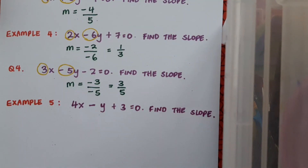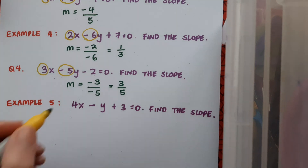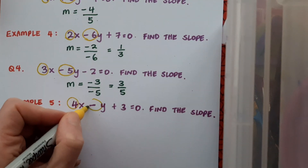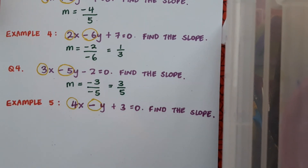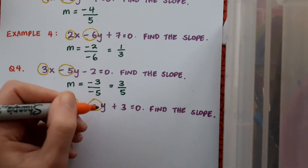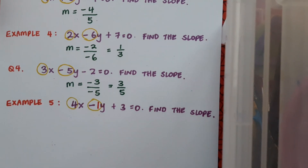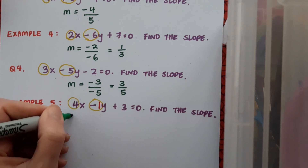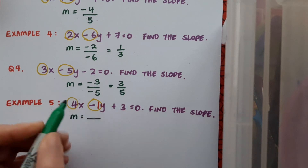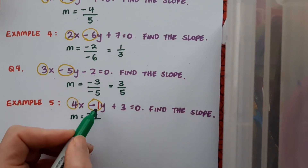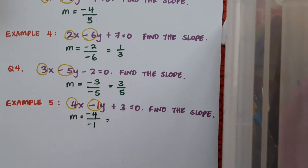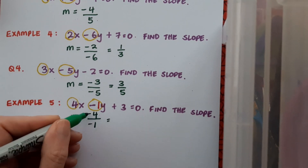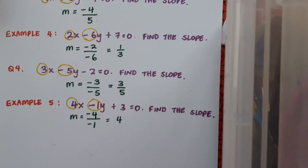One last example: 4x minus y plus 3 equals 0. We want the slope. Looking for a and b values: a is 4, and for b there's no number written in front of the y, but minus y is minus 1y, so b equals minus 1. To find the slope: change the sign of x, that's minus 4, over the y coefficient exactly as it is, which is minus 1. Minus divided by minus is plus, and 4 over 1 is 4. So the slope is just 4.